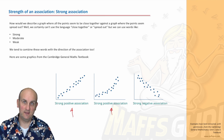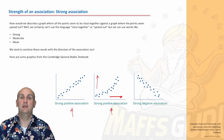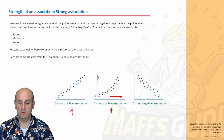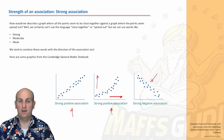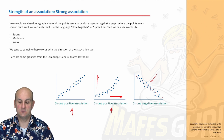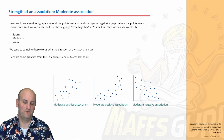This one here is also a strong, positive association — the points seem to be heading up — but it's a non-linear association. So: strong, positive, non-linear. And again here, strong, negative association — and I would say that was generally a linear association — so strong, negative, linear association.